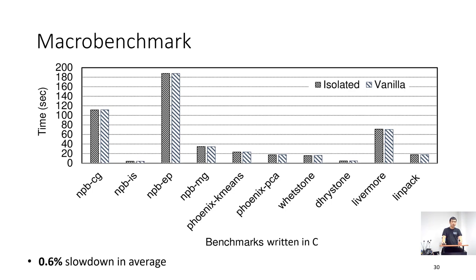Finally, we measured a macro-benchmark. We chose several benchmark suites and compared our isolated version of RustyHermit to the vanilla version. We can observe that our isolation scheme introduces 0.6% slowdown on average compared to the vanilla version.